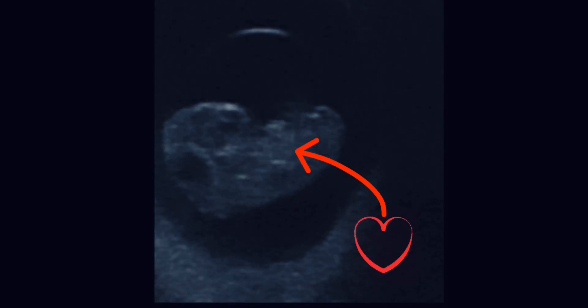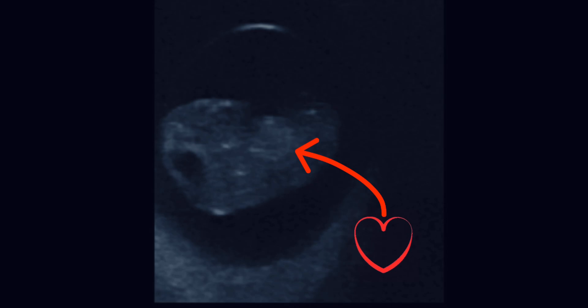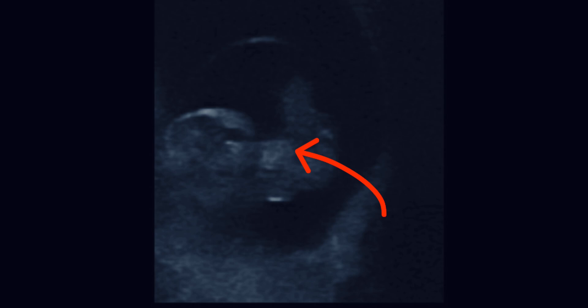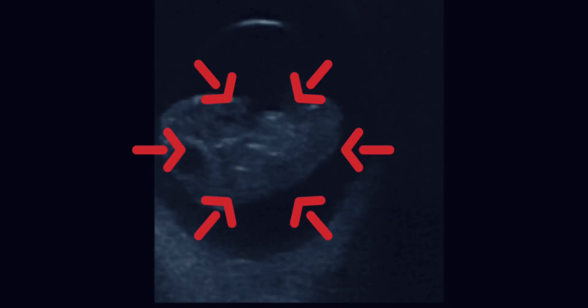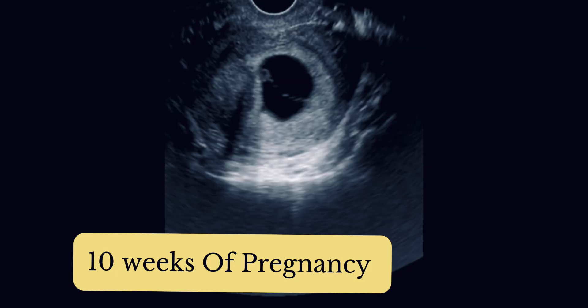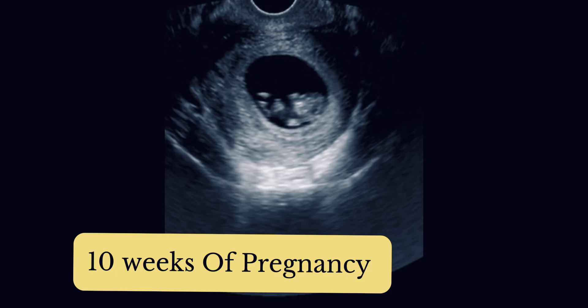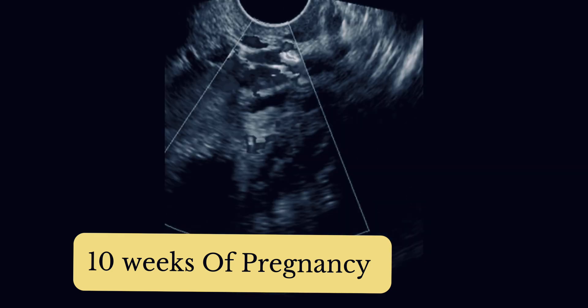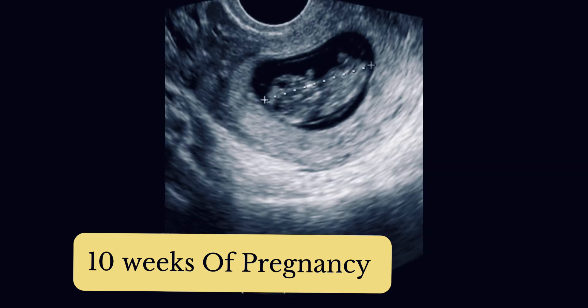A fetal heartbeat can be detected as early as 34 days — just under 6 weeks — of gestation using a high-quality, high-frequency transvaginal ultrasound with a crown rump length (CRL) as small as 1 to 2 millimeters. If a fetal heartbeat is not observed with a CRL of greater than or equal to 7 millimeters on transvaginal ultrasound, embryonic demise may be diagnosed. Confirmation of demise can be made through repeat scans and serial quantitative beta-HCG measurements.